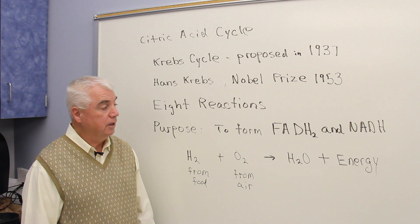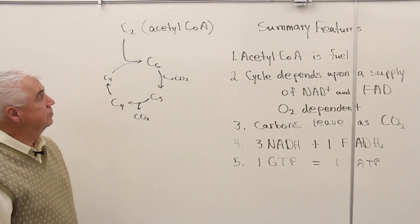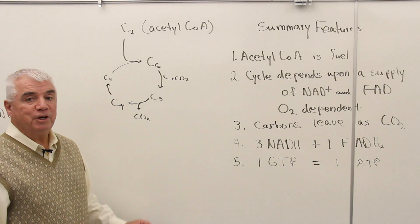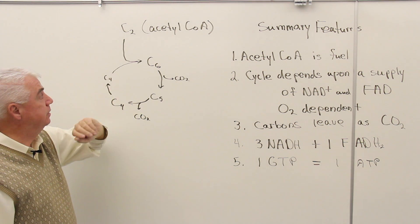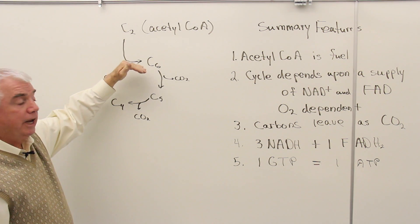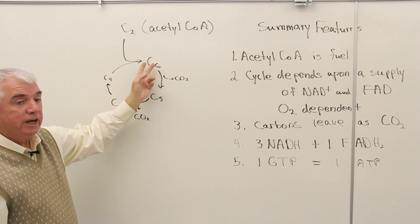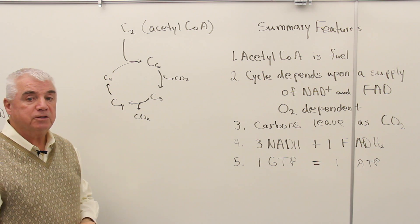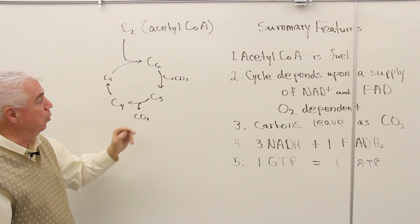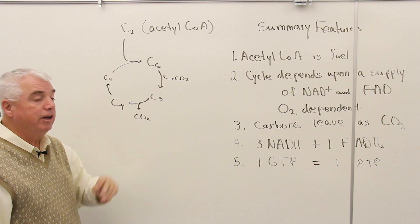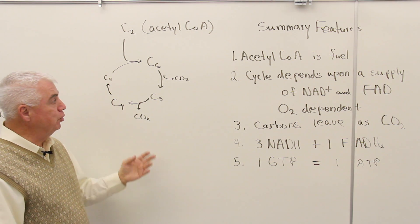Let's look at the carbons involved in the citric acid cycle. The fuel is acetyl-CoA, a two-carbon unit that enters the cycle reacting with C4 to form C6. Then a series of reactions takes place, ultimately coming back to the starting point and giving off two molecules of CO2.